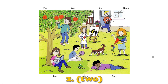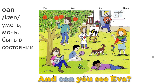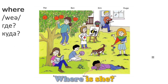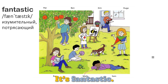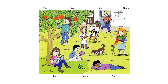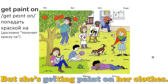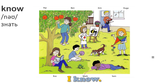Two. And can you see Eva? No. Where is she? Eva's painting a bee. It's fantastic. But she's getting paint on her clothes. I know.